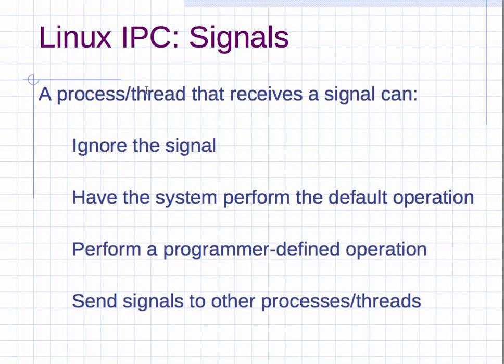A process or a thread that receives a signal can choose to do any number of things. For example, it can ignore the signal—just forget about it. You can have a C program have the system perform the default operation for a signal. For example, Control-C, the default operation is to kill that process. Or you can receive the signal using a programmer-defined chunk of code and decide to do whatever you want with any one of those 64 signals.